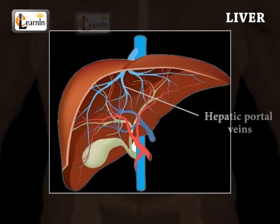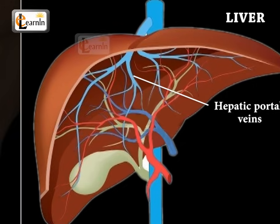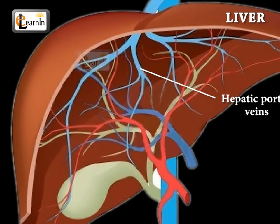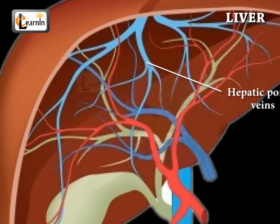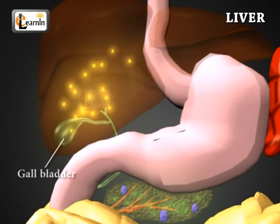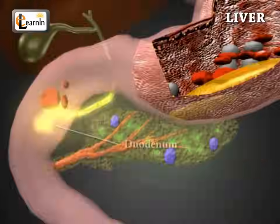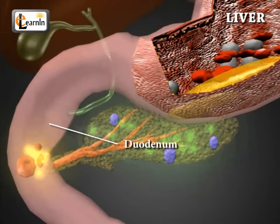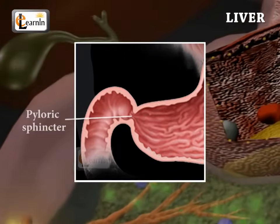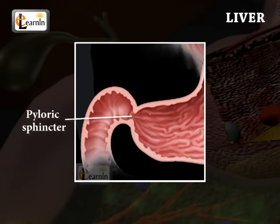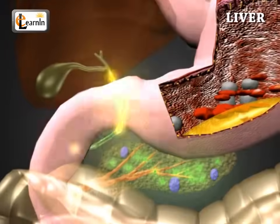The hepatic portal veins, which are blood vessels that carry blood from the gastrointestinal tract and spleen to the liver, pick up nutrients and toxins from the stomach and intestines for processing. The hepatic ducts and gallbladder send the processed bile to the duodenum, which is about 25 centimeters long and C-shaped. The stomach opens up into the duodenum through a pyloric sphincter, a muscle that acts as a valve controlling passage of food from the stomach into the small intestine.